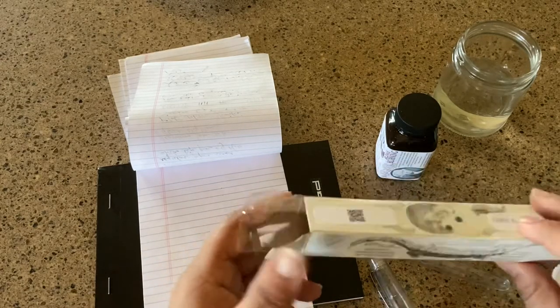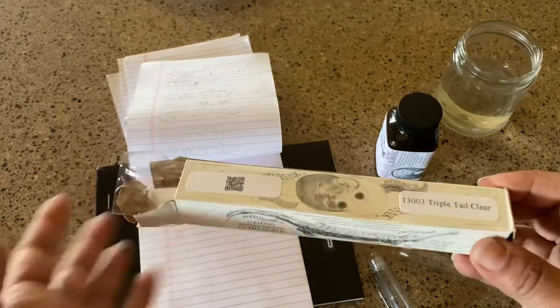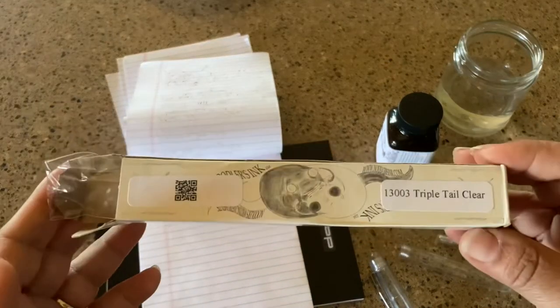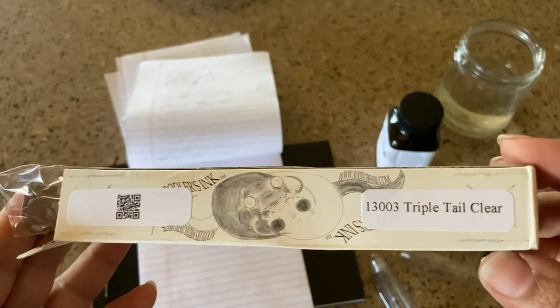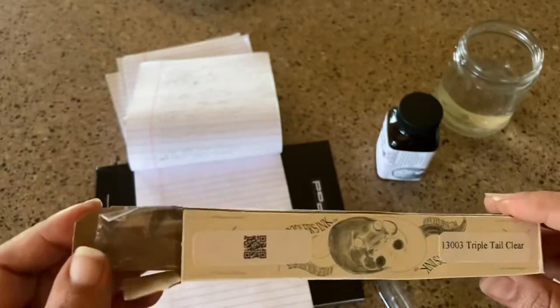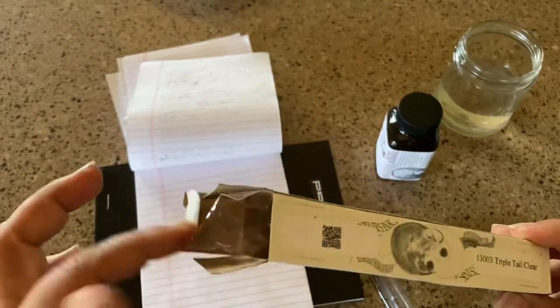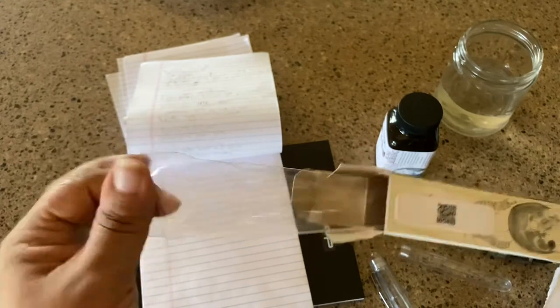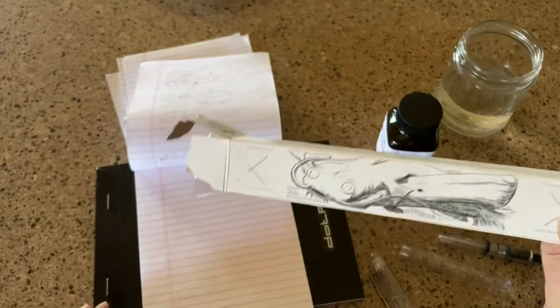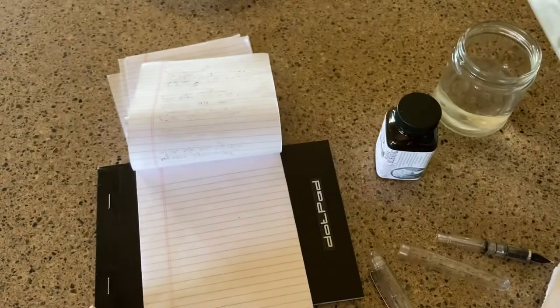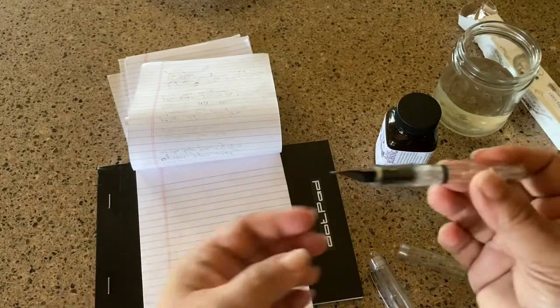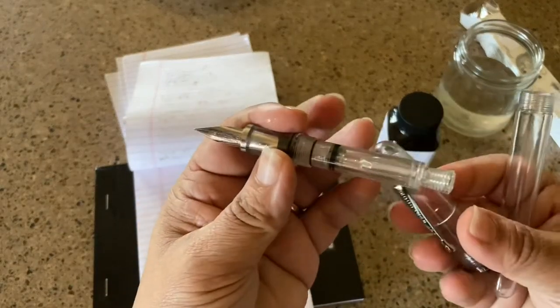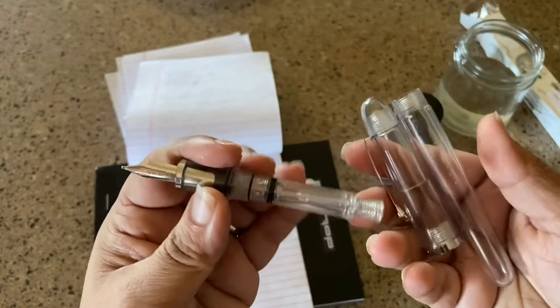So today I unboxed for myself the Noodler's Triple Tail Clear, and I'm really excited about it. I took it out. It came in just a plastic wrapper with their iconic box, and I took these portions off.